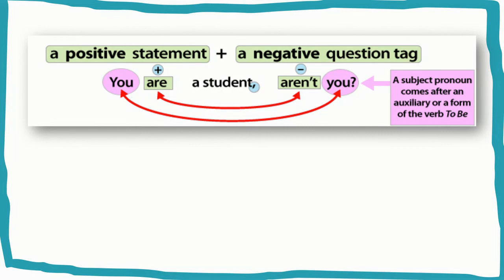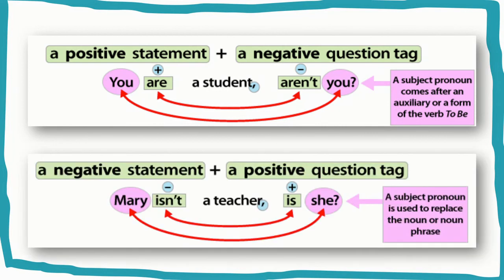In a question tag, a positive statement is followed by a negative question tag. Look at the example: 'You are a student, aren't you?' You need to put a comma before a question tag. The positive statement is 'you are a student,' followed by the negative question tag 'aren't you.'